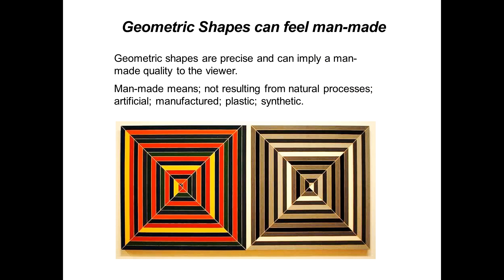Geometric shapes can feel man-made. Geometric shapes are precise and can imply a man-made quality to the viewer. Man-made here means not resulting from a natural process — artificial, manufactured, plastic, synthetic. Below we're looking at some paintings by Stella. Although he created them by hand at a time when computers were in their infancy and this is not computer-generated, it still has a very man-made geometric feel to it. You don't see the hand of man in it.